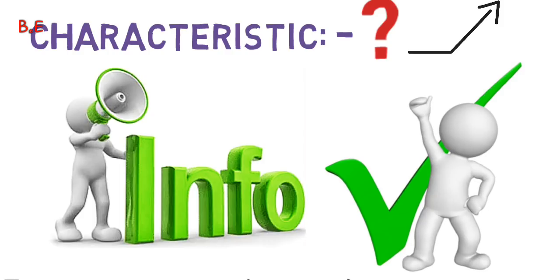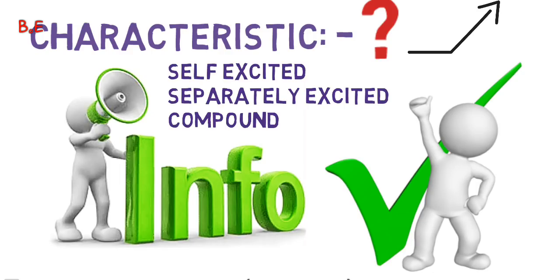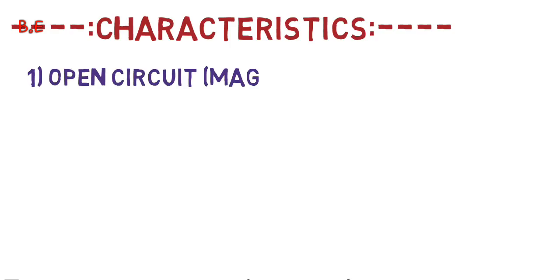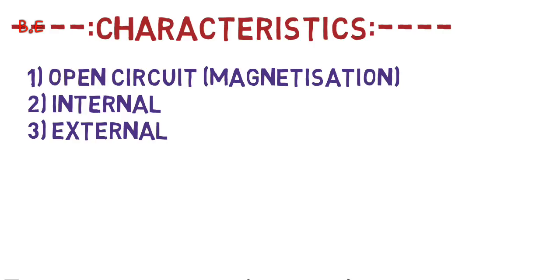There are three types of tests conducted on different generators — like self-excited generator, separately excited generator, and compound generator — and the characteristic is plotted according to its performance. This characteristic is normally of three types: open circuit characteristic, internal characteristic, and external characteristic.